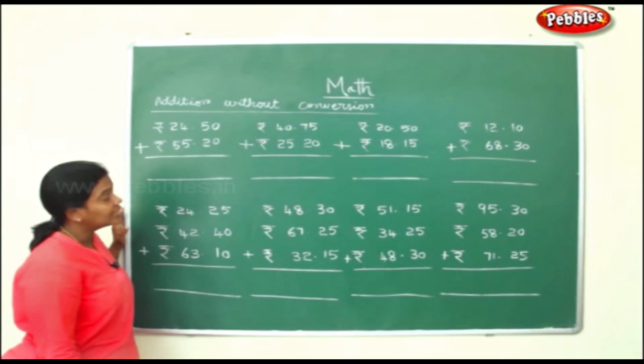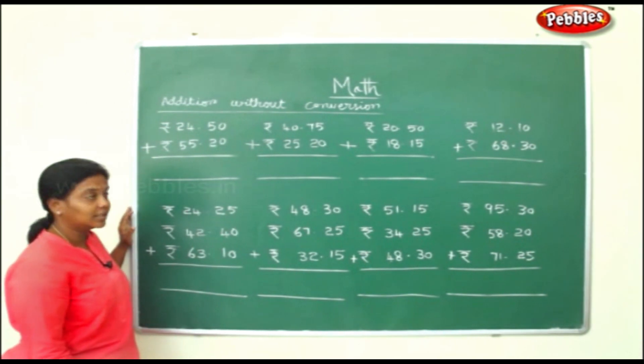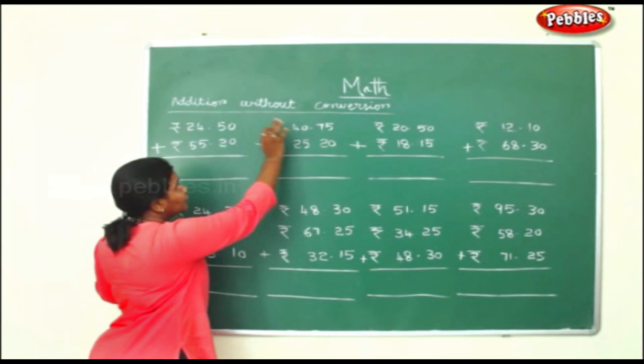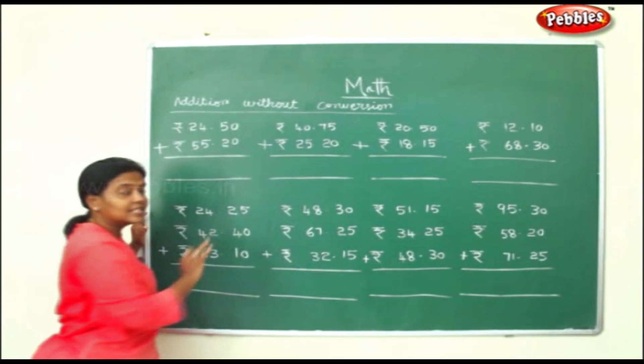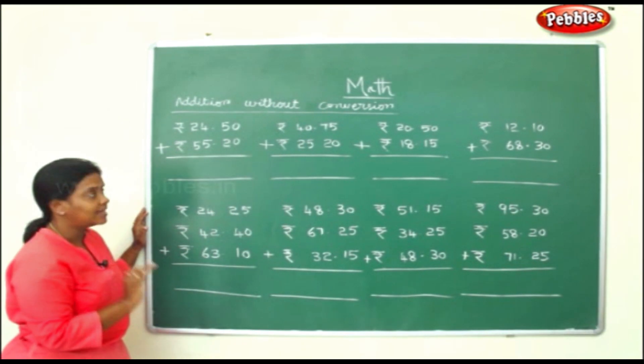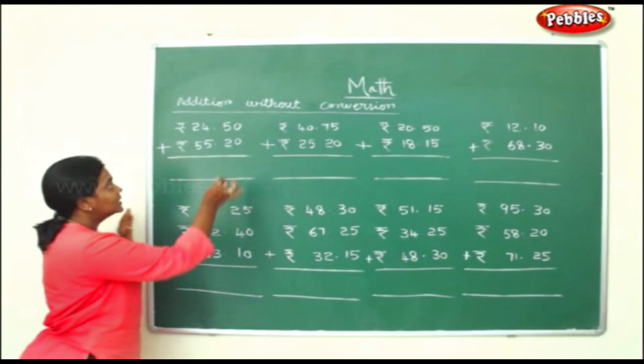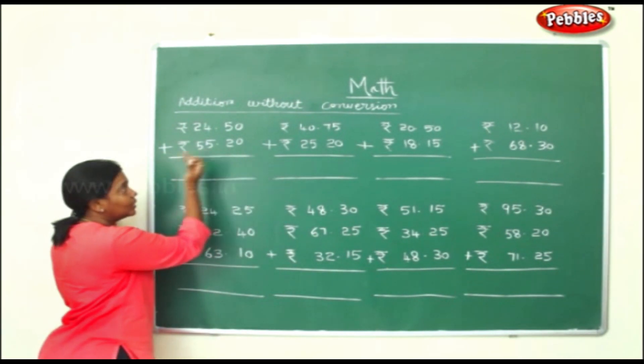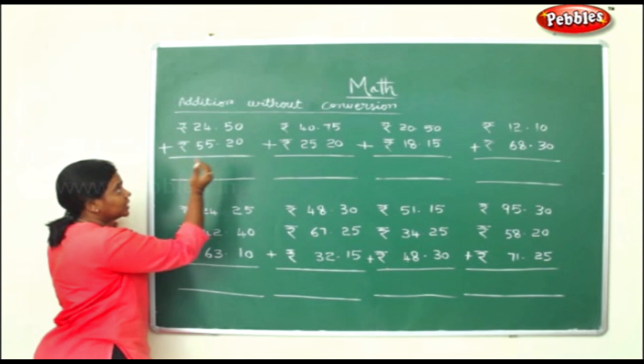Now let us see addition without conversion. You don't have to confuse yourself — it is just simple addition. We'll just add the paise first and then we'll move on to the rupees.